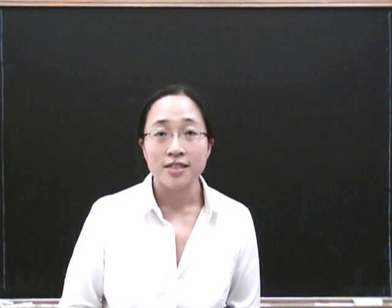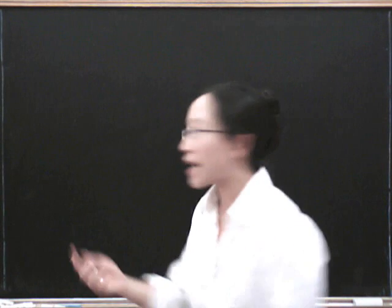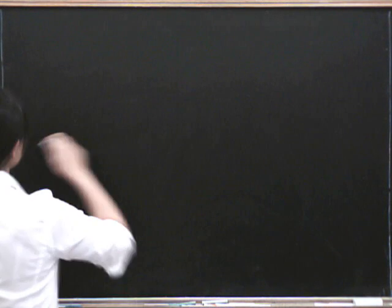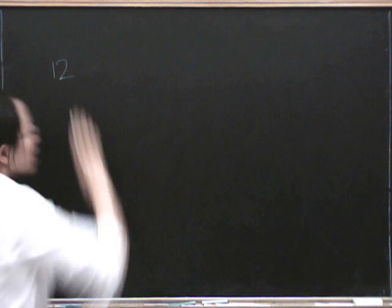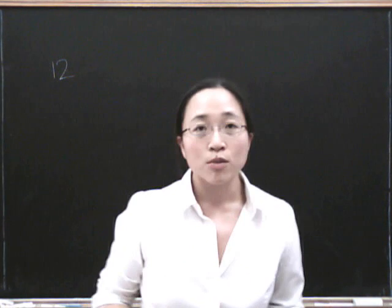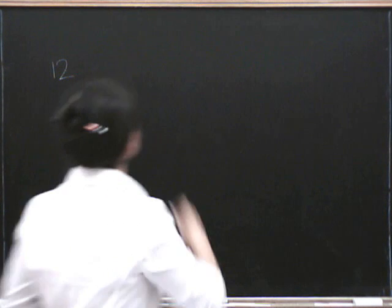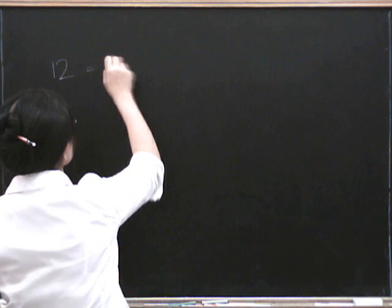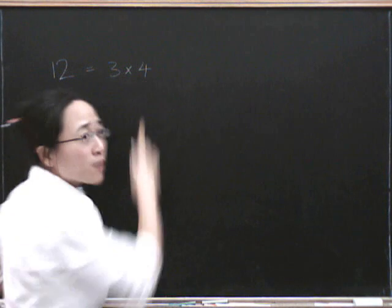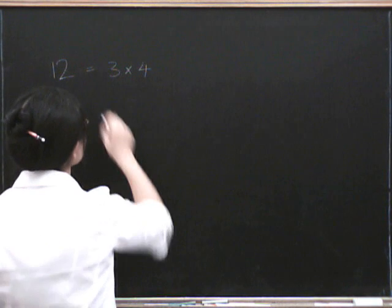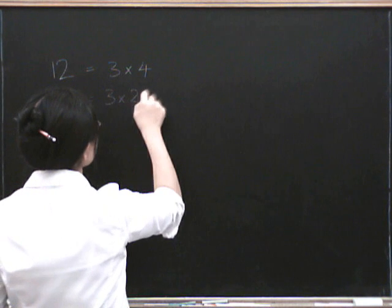This is all about multiplying and dividing. We're not thinking about breaking down and building up by adding and subtracting. Let's think about the number 12, for example — how we can write it down as a product of numbers. Well, we can certainly write it down as 3 times 4. But we know that 4 is the same as 2 times 2, so we can write this as 3 times 2 times 2.